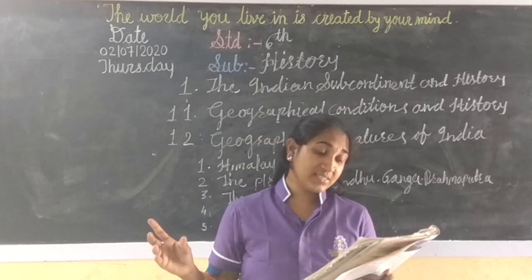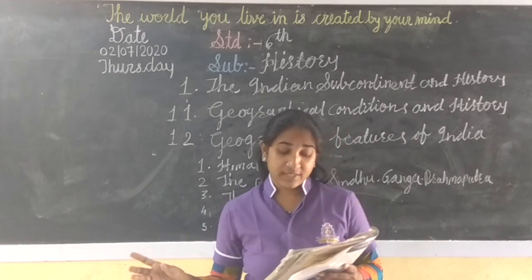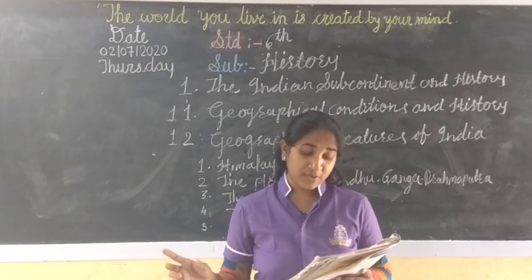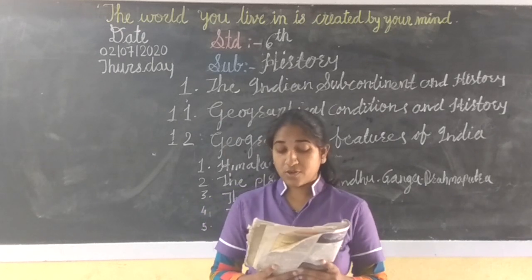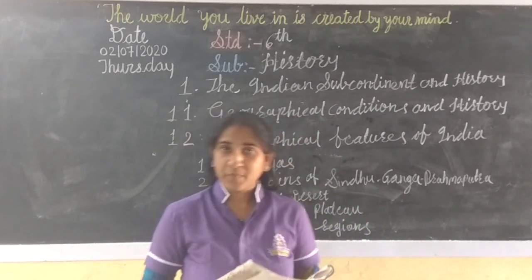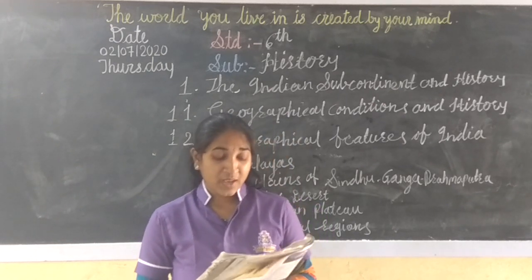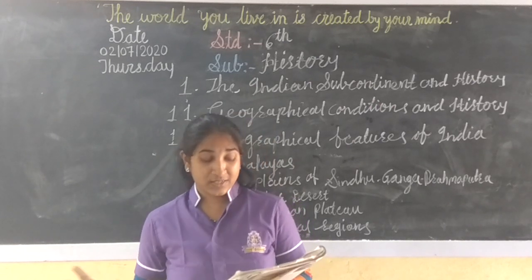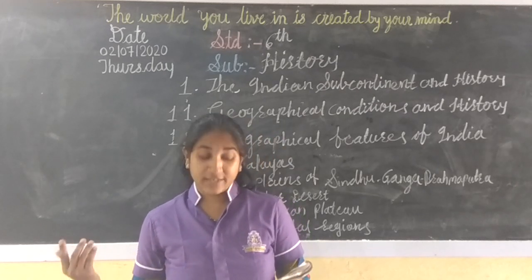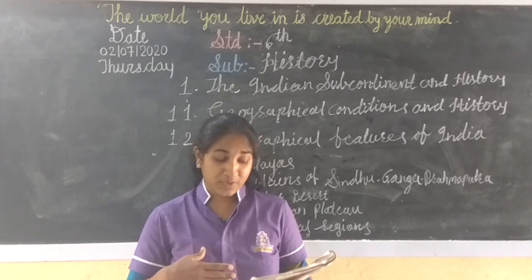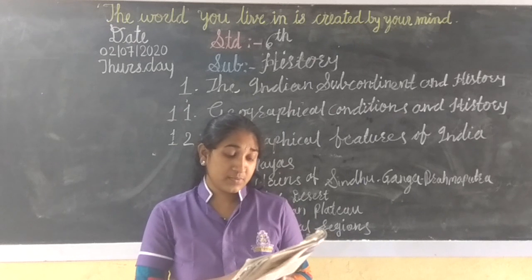The desert has the Sutlej River to its north, the Aravalli Mountain ranges to its east, the Rann of Kutch to its south, and the Indus River to its west. The Indus is also called the Sindhu. So in all sides, the desert region is bounded and spread across these areas.